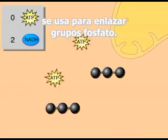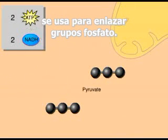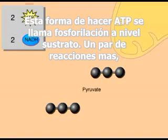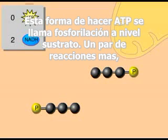The energy released is used to attach phosphate groups. The phosphates are transferred to ADP, finally making some ATP. This way of making ATP is called substrate-level phosphorylation.